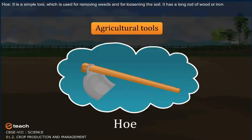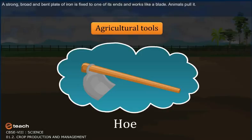Hoe. It is a simple tool which is used for removing weeds and for loosening the soil. It has a long rod of wood or iron. A strong, broad and bent plate of iron is fixed to one of its ends and works like a blade. Animals pull it.